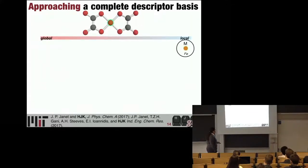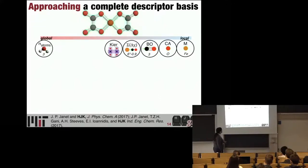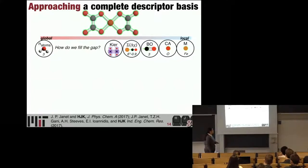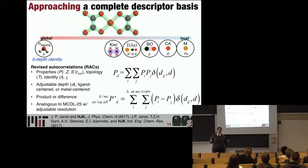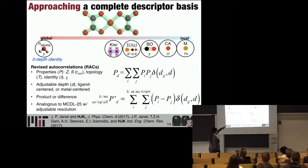I wanted to show at least something new. We knew this representation wasn't a very systematic way to do things — some of our features were more local and we really had nothing in the mid range. So we introduced a new descriptor basis. This basis on its own is not predictive, but with feature selection, it can identify the essential length scales that matter most — and it's still geometry free. We revised extended auto-correlation functions that have been used in the drug discovery community since the early eighties. We take five properties: nuclear charge, covalent radius, topology, identity, and electronegativity, and we take the products and differences of these quantities on the molecular graph.